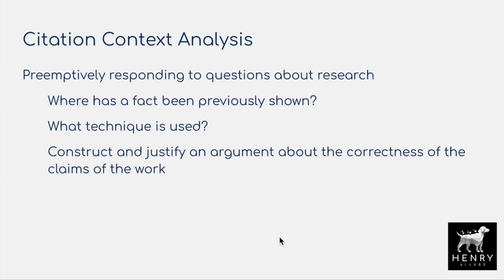This paper looks at the supervised learning task of citation context analysis. We're going to preemptively respond to questions about research — like where has a fact been previously shown, what technique is being used in the paper you're citing. For example, you cite the SimClear paper to illustrate what technique is being used. Citations also construct and justify arguments about the correctness of claims. This idea of building a context tree and a graph of how papers relate to each other builds up the argument for the current scientific paper.